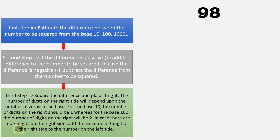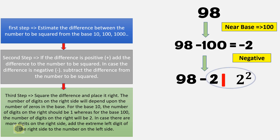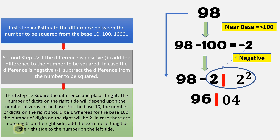I am trying to cover all different combinations so that there is no confusion while finding the square of numbers near the base numbers. Consider the example of 98. The base nearer to 98 is 100 and the difference is 98 minus 100, which equals minus 2. Since the difference is negative, subtract the difference from the number to be squared. Square the difference and place it on the right. Since the base is 100 there should be 2 digits on the right, but we only have 1 digit — the number 4 — so it is written as 04. Combining the numbers, the square of 98 is 9604.